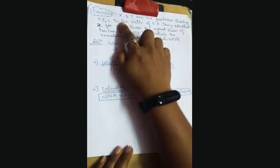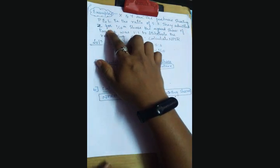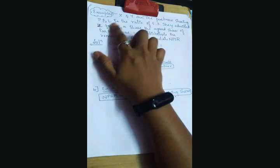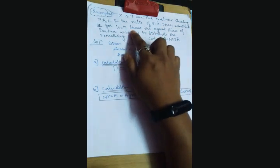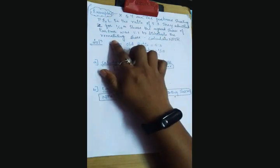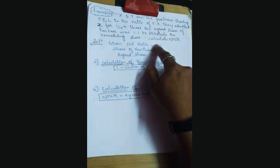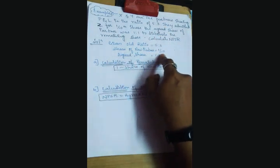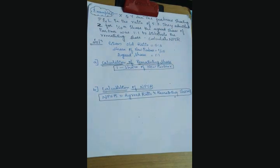Coming to one example of the first case. X and Y are the partners sharing profit and loss in the ratio of 5:3. They admit Z for 1/10th share — this is the new partner's share and this is the old ratio. The agreed share of old partners X and Y to distribute the remaining share is 1:1. Calculate the NPSR. Given: old ratio is 5:3, share of new partner is 1/10, and agreed share is 1:1.